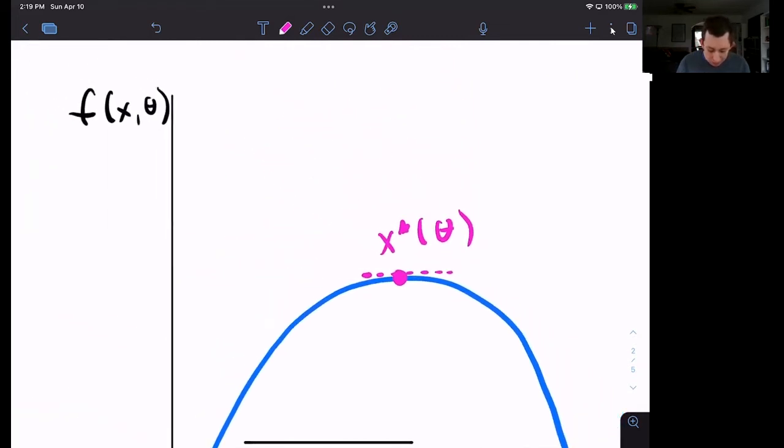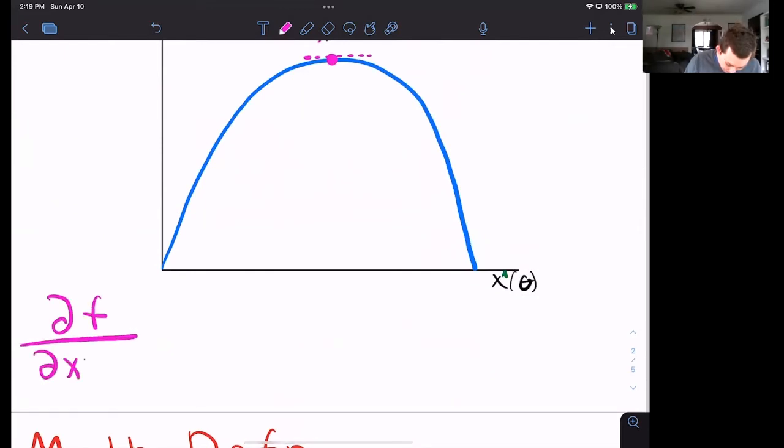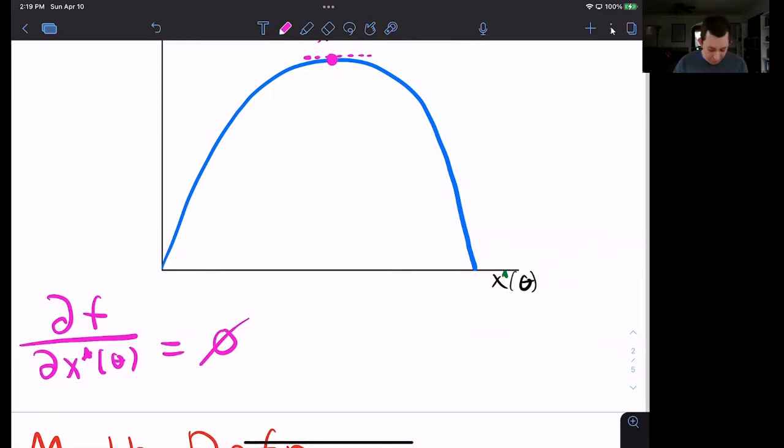And that is the part we're going to use for the envelope theorem. So all we're saying is that, okay, well, df at the optimum is equal to zero. And that is going to come up here as we go into the mathematical definition.